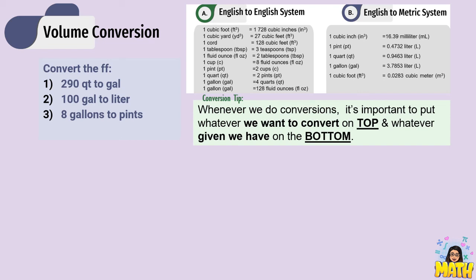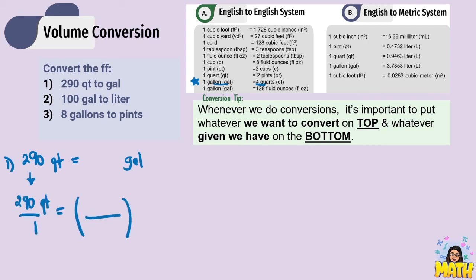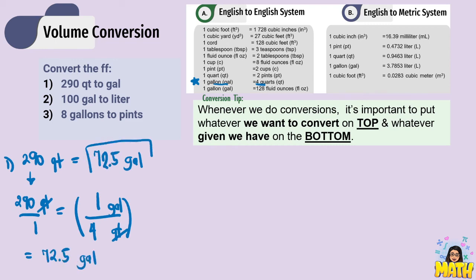Number 1: convert 290 quarts into gallons. That is English to English system. Using 1 gallon equals 4 quarts: 290 times 1 divided by 4 gives 72.5 gallons. That is our answer for number one.